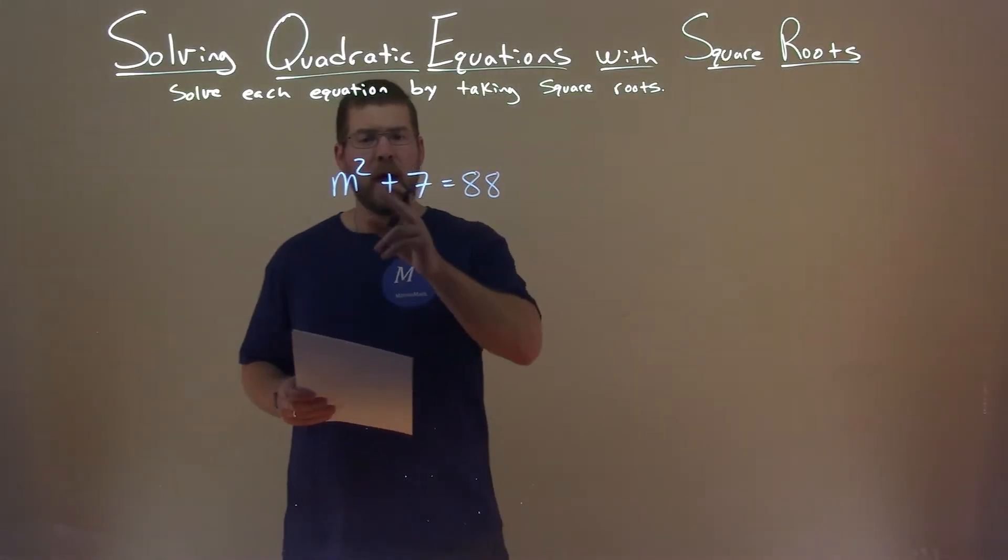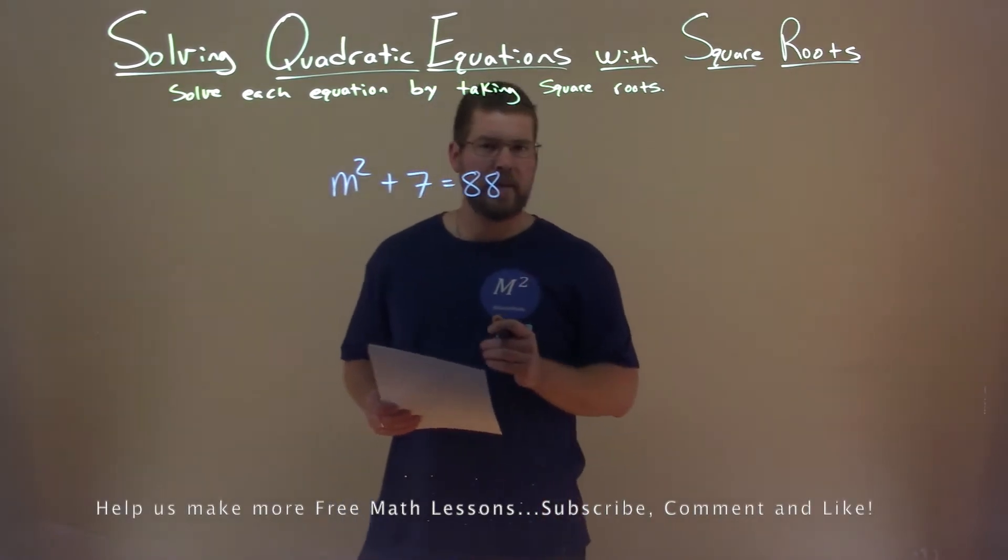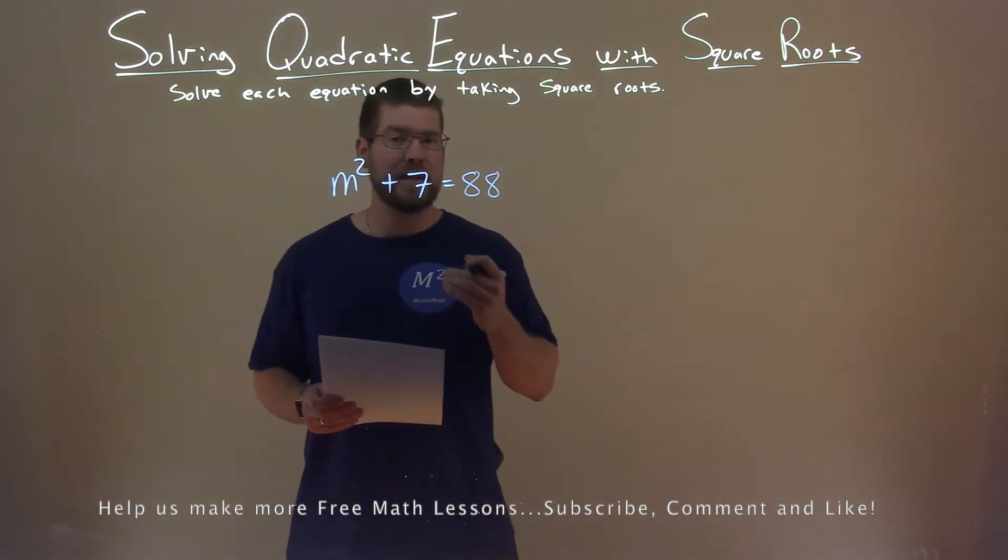We're given this problem right here, m squared plus 7 equals 88, and we want to solve this equation by taking square roots.